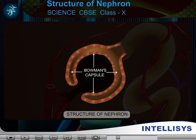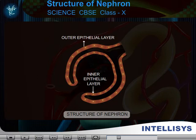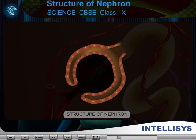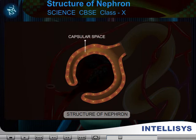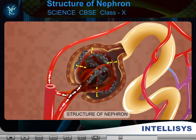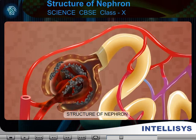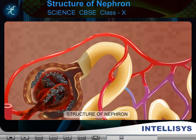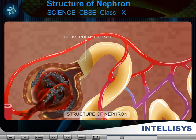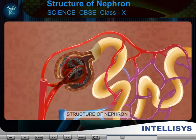2. Bowman's capsule. It is the double-layered epithelial cup which contains the glomerulus. The space between the two layers of Bowman's capsule is called capsular space. The water and solutes are filtered through the Bowman's capsule. The fluid that is filtered into the Bowman's capsule is called glomerular filtrate.